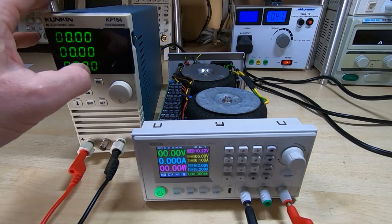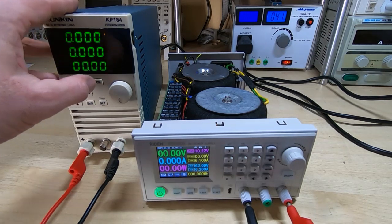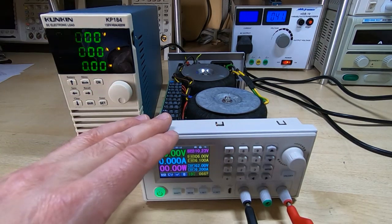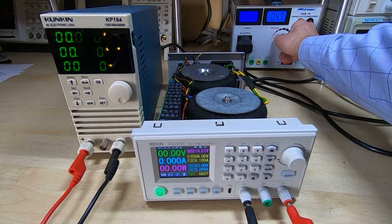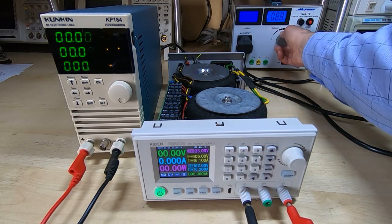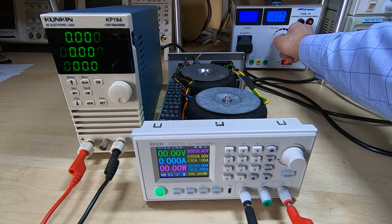I've got the Kunkin KP184 electronic load connected to the Ryden supply. I'll increase the mains voltage to 120 volts, that's half of what it should be run at, and do this just for initial testing.